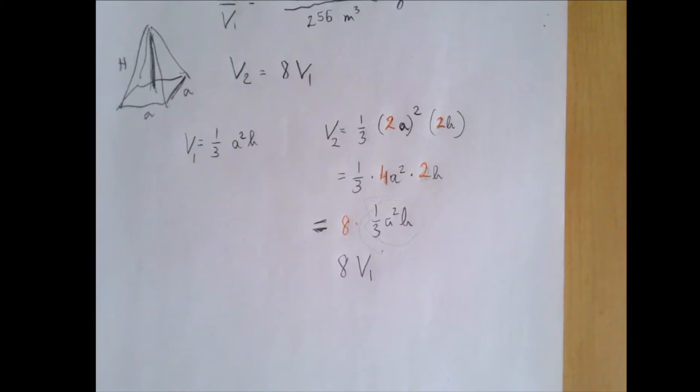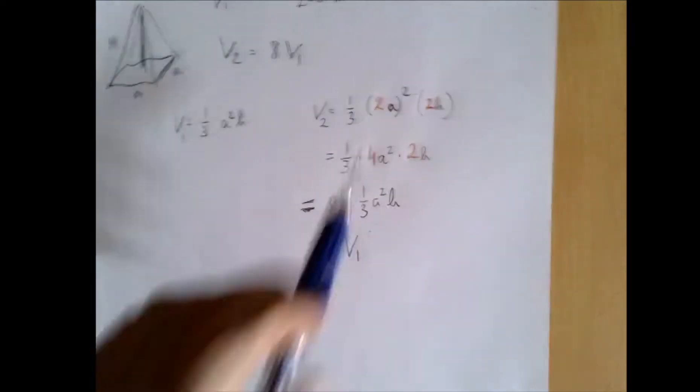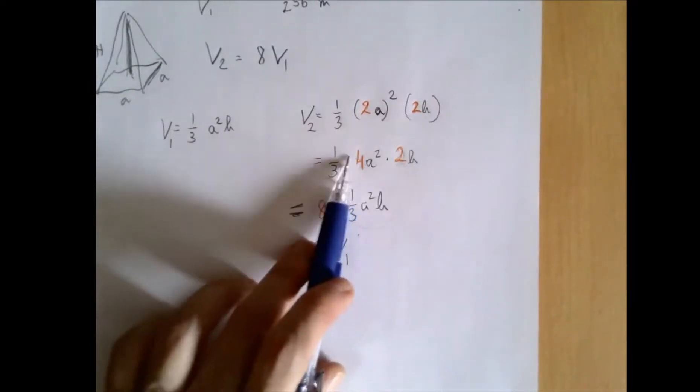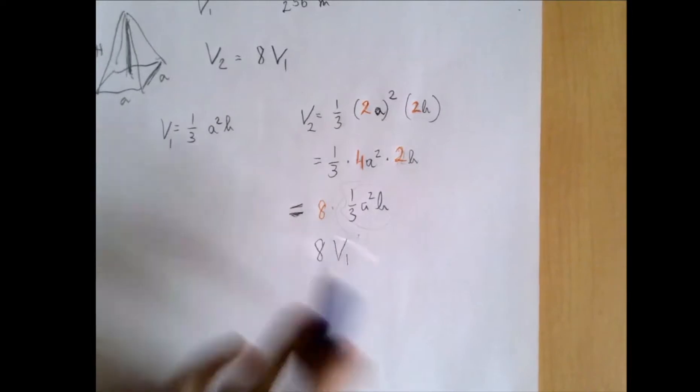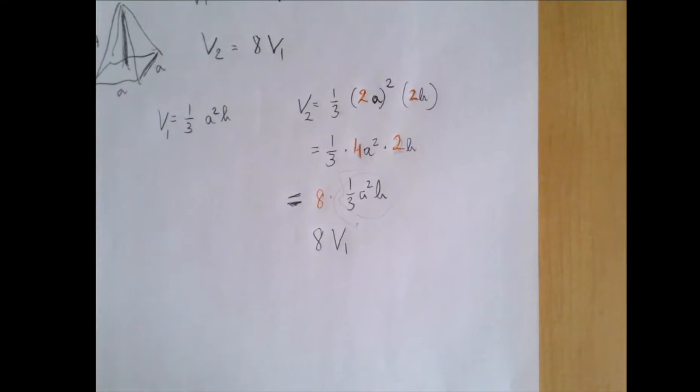If you double an object, then the volume is going to multiply by 8. Suppose we triple the sides and the height, what happens then? This would be a 3A. This would be 3H. So altogether a 9 and a 3. 27 would pop out. So that is true. If you have an object and you triple every side, then you multiply the volume by 27. Kind of cool, isn't it?